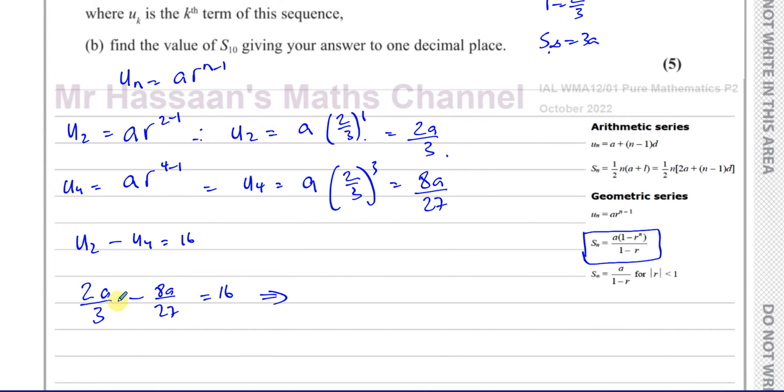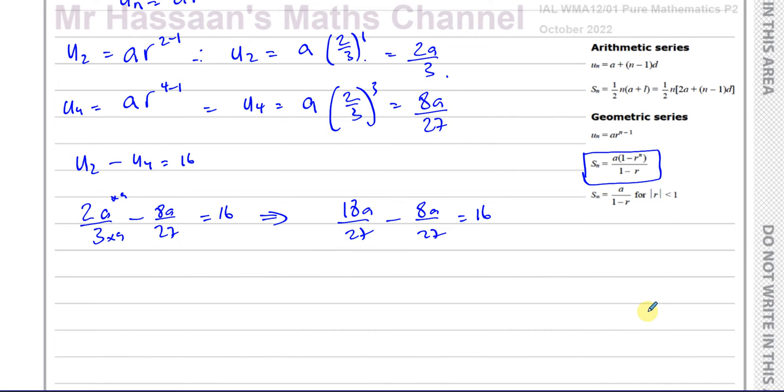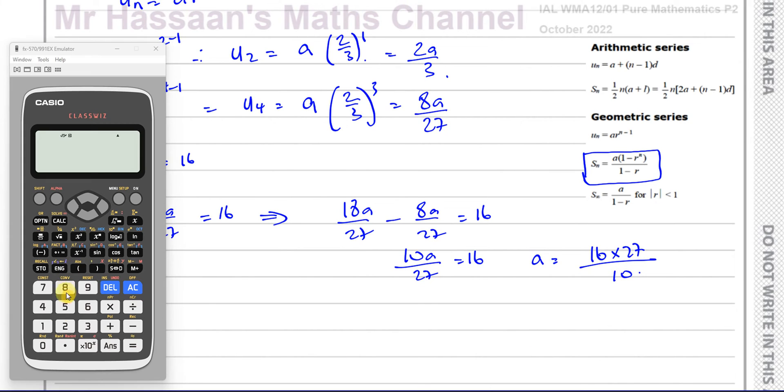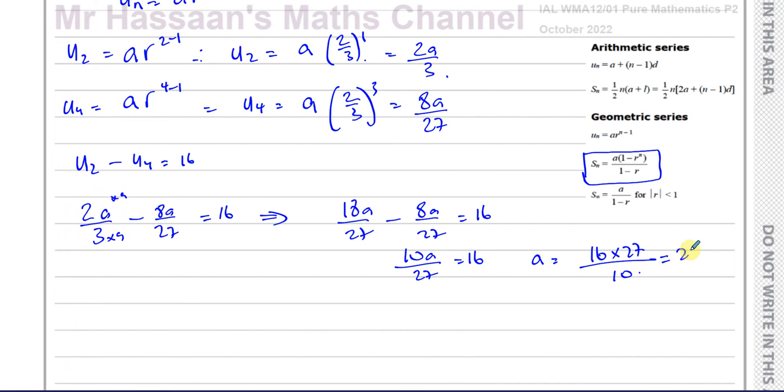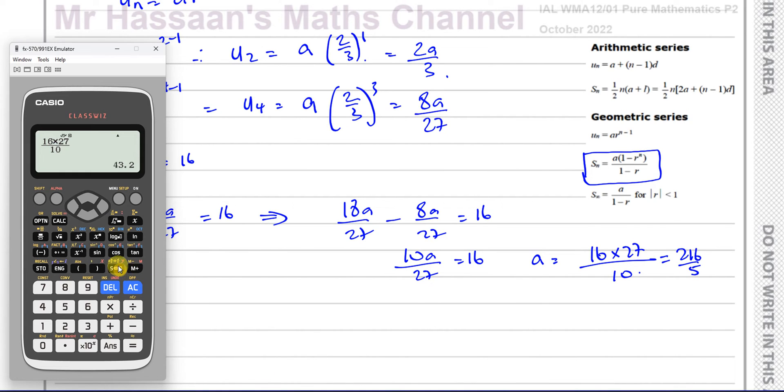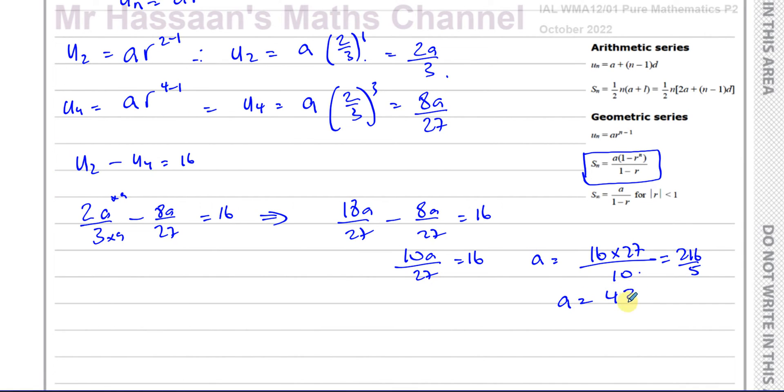So I can say that 2A over 3 minus 8A over 27 equals 16. I can make these into equivalent fractions. This is going to be times nine. So 18A over 27 minus 8A over 27 equals 16. So now I end up with 10A over 27 equals 16. Therefore A is equal to 16 times 27 over 10. That gives me 216 over 5, which is 43.2. That is the first term of the sequence.